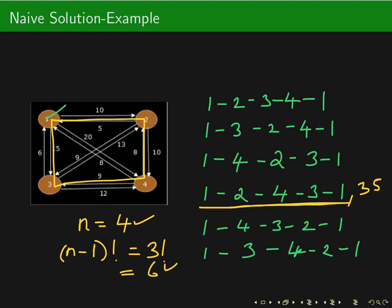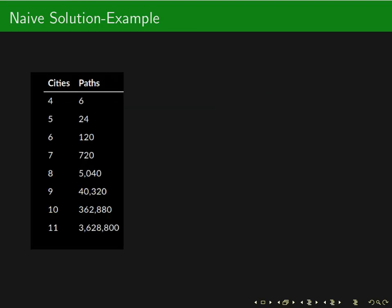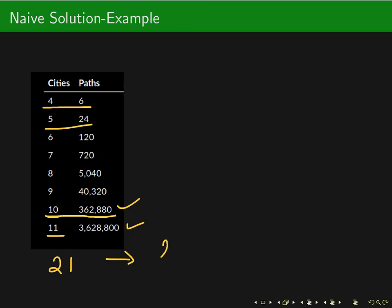Let us analyze the growth of the number of paths according to the number of cities. We saw that with four cities the number of paths is six; with five cities there are 24 paths. If the number of cities is 10, the number of paths becomes very large, and with 11 cities it grows even further. Suppose you have to calculate a minimum cost path for 21 cities — that means you have 20! paths.